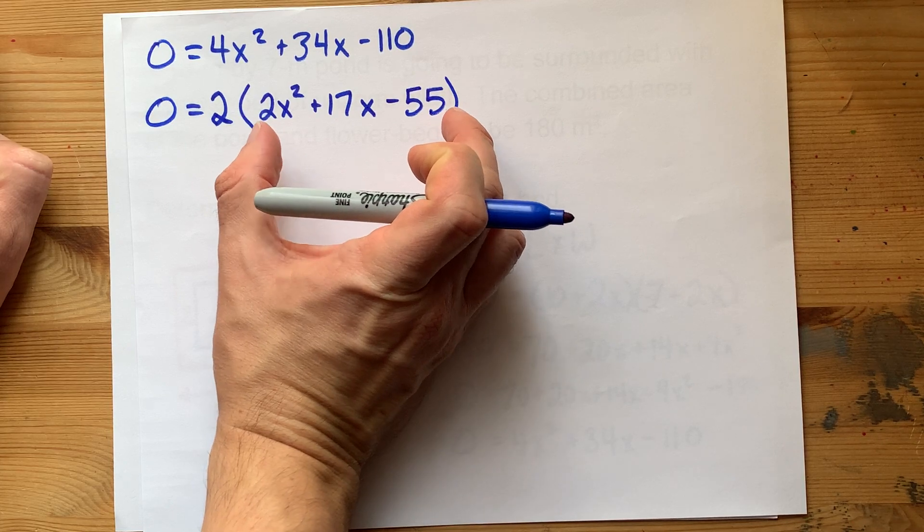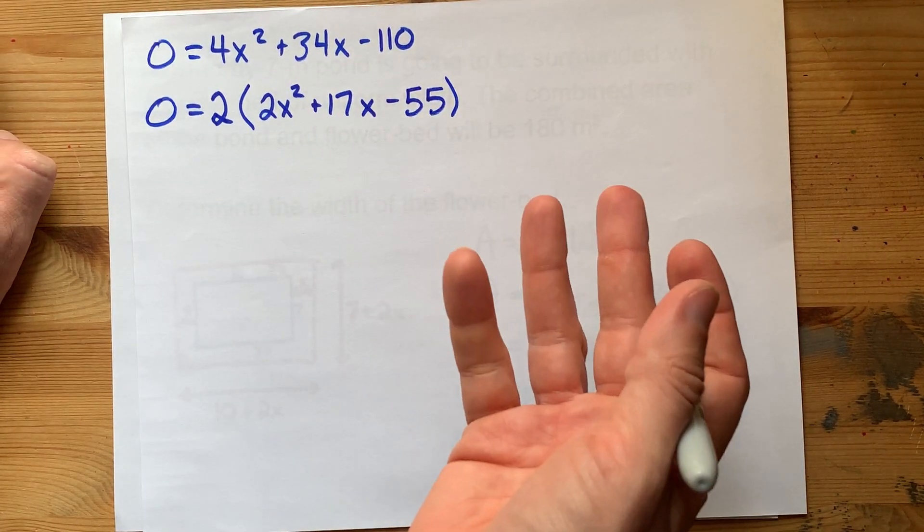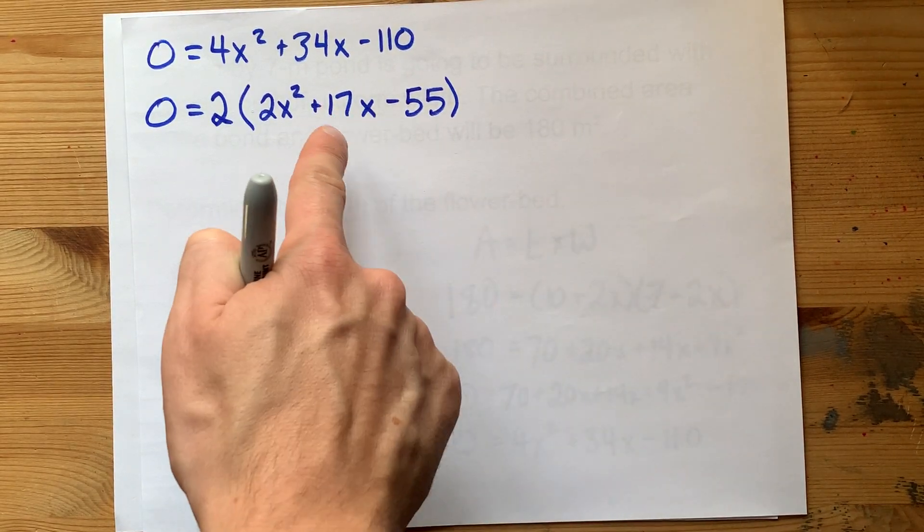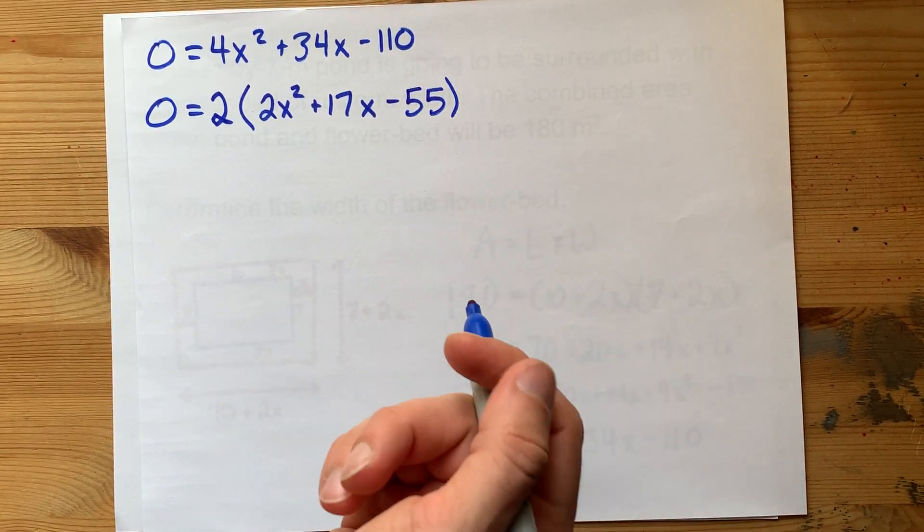Now you could use the quadratic formula on this, which is the exact same thing, but with smaller numbers. But you can also be expected to factor that. We call that decomposition here.